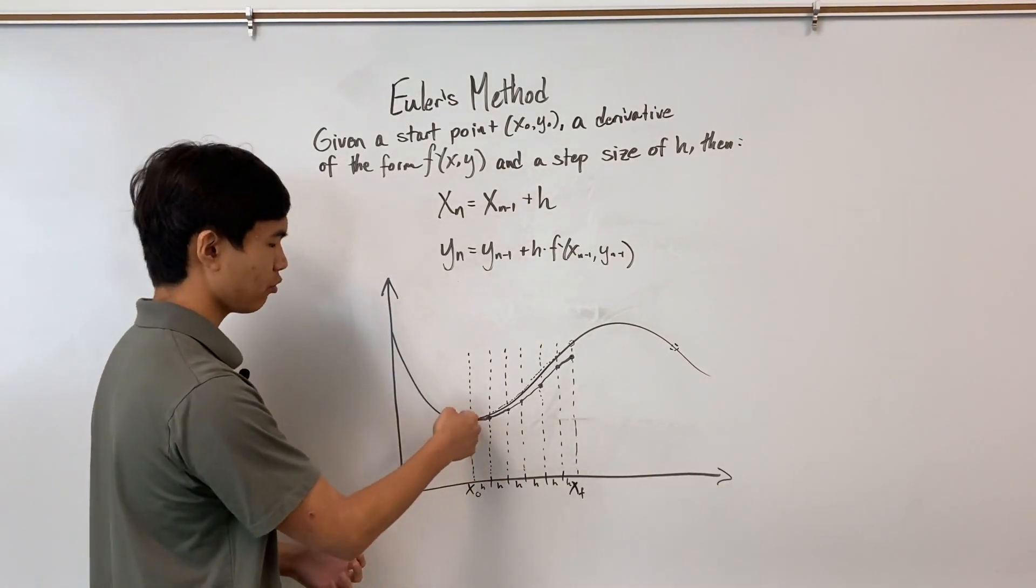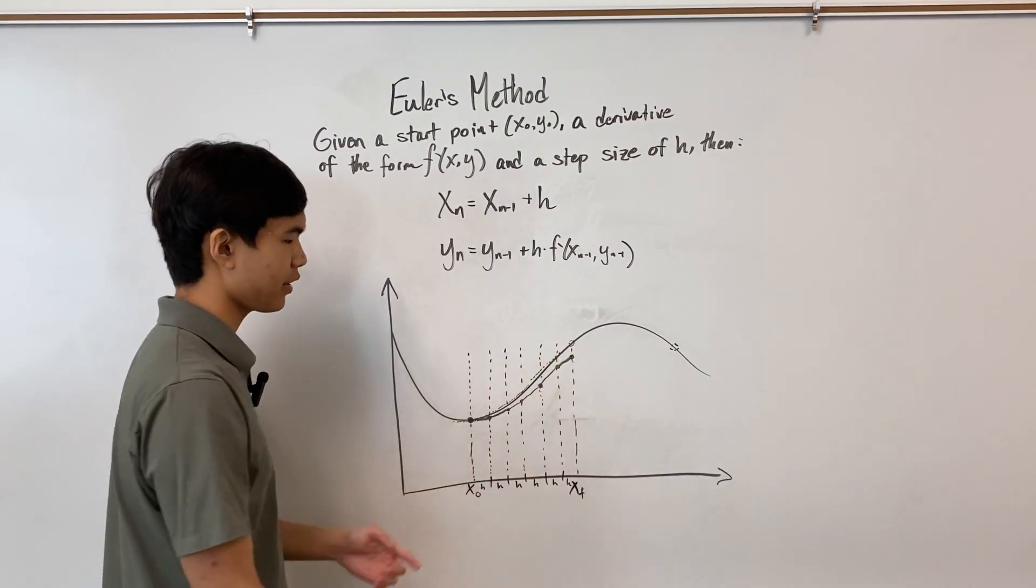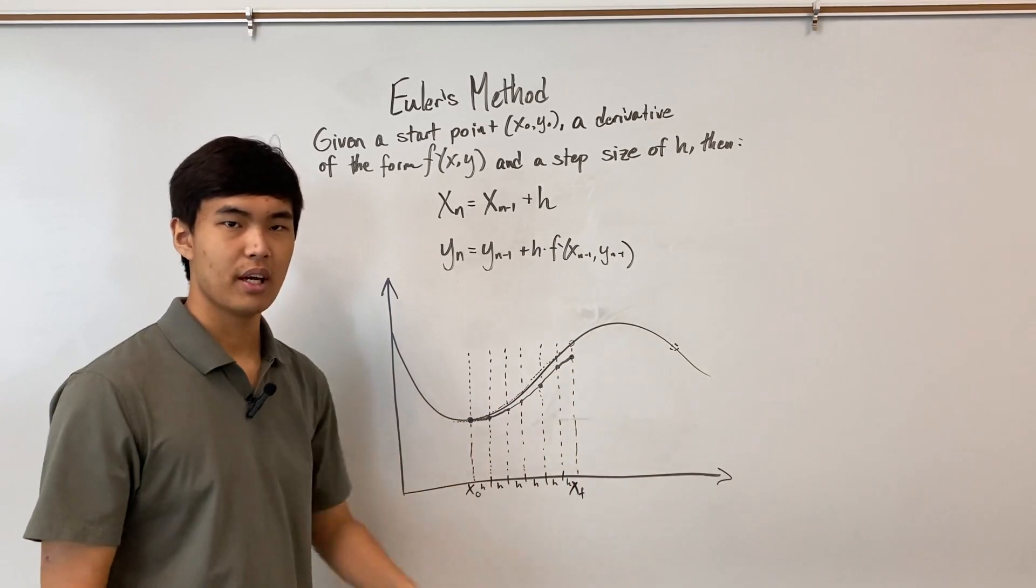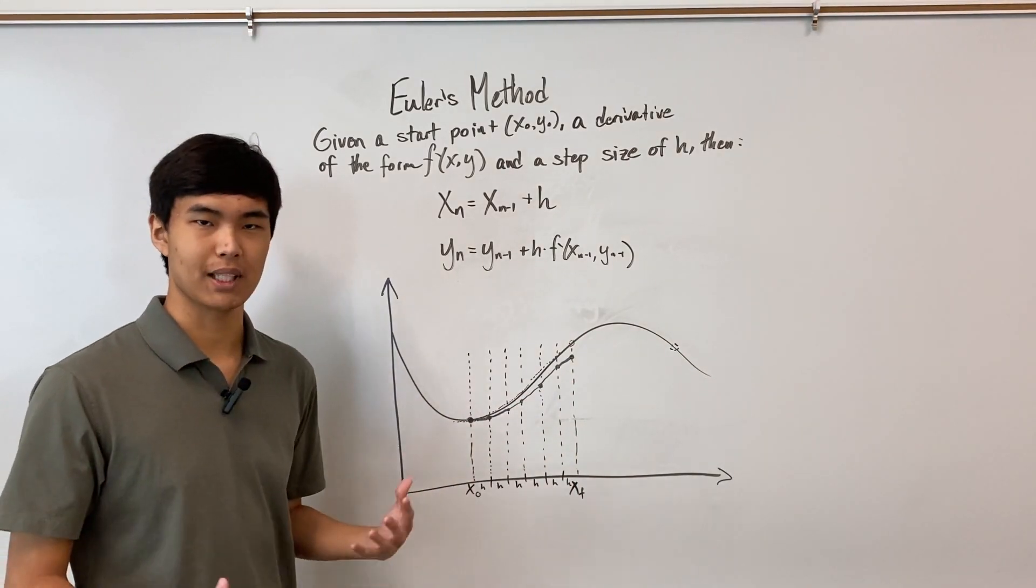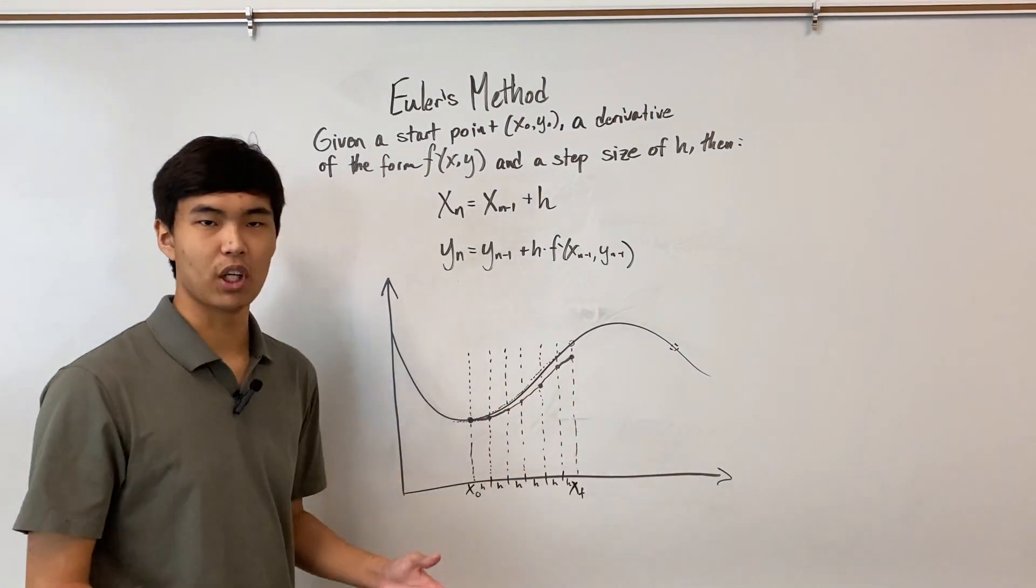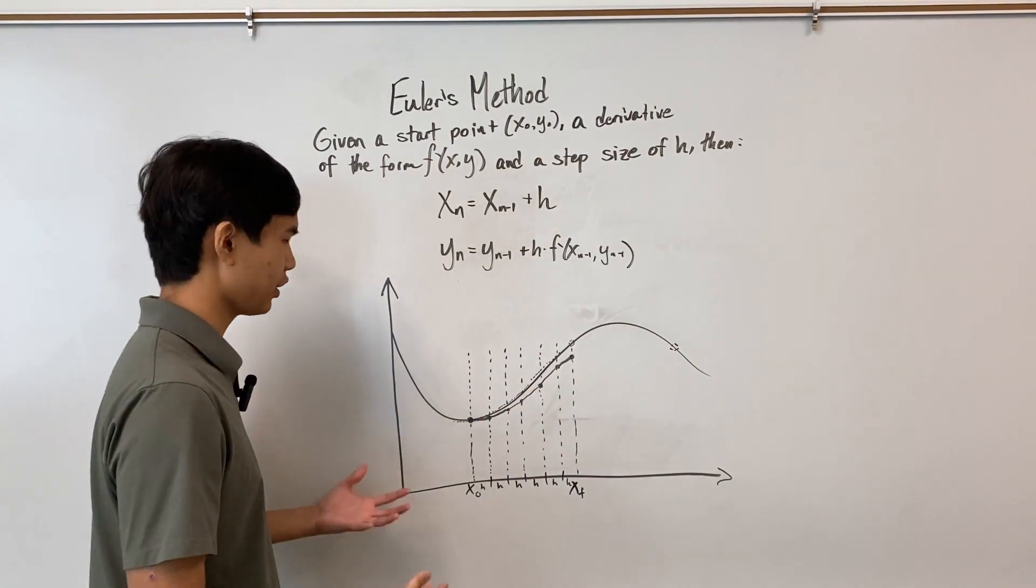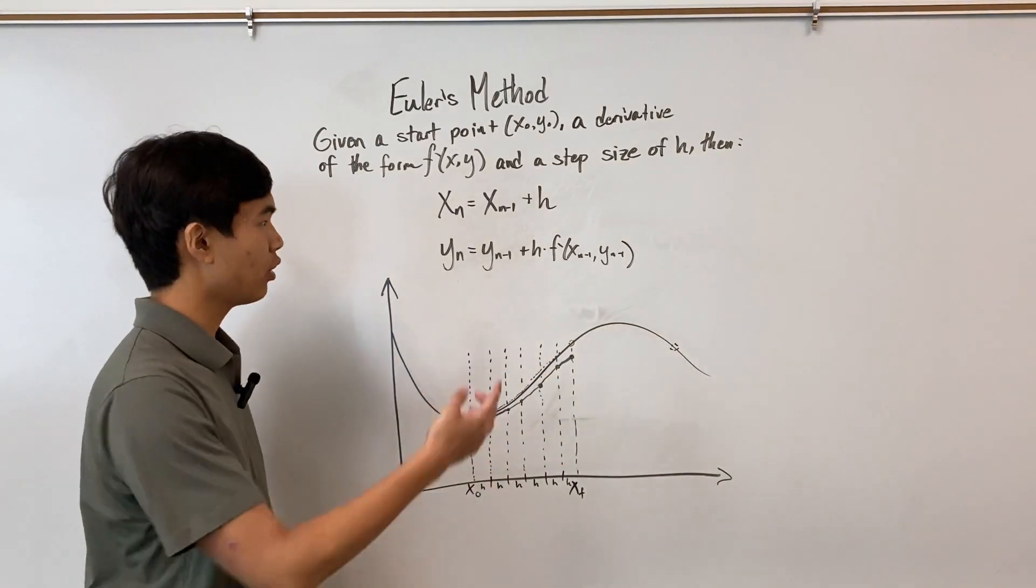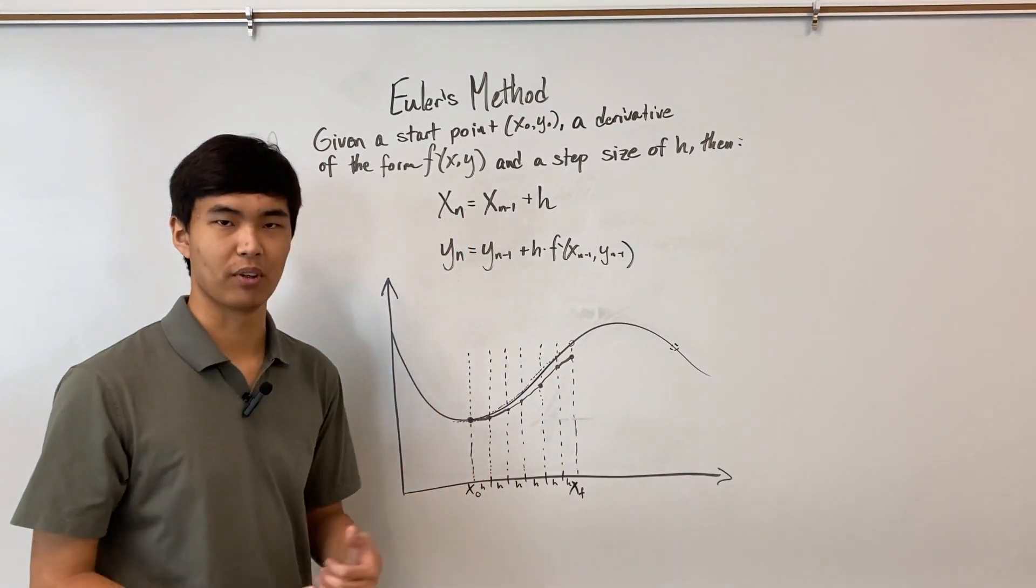What we're doing here is we're reconstructing the curve with straight tangent lines instead of one continuous curve. And going back to our discussion about slope fields, these tangent lines are just us following the slope field to get a good estimation of our actual solution. That's how Euler's method and slope fields are related.